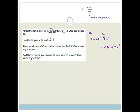So it's 288.18 meters per second. Now it says, if the speed of sound is 343 meters per second, will Isidore hear the rifle shot? Give a reason for your answer.